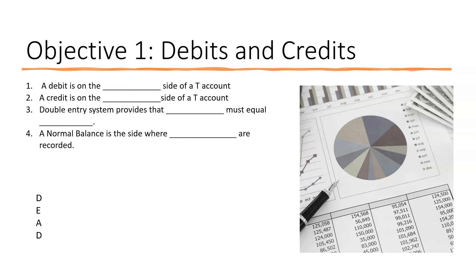A debit is on the left side of the T-account — so which side does a debit belong on? That's the left side. A credit is on the opposite side, the right side. So remember T-accounts show debits on the left and credits on the right.